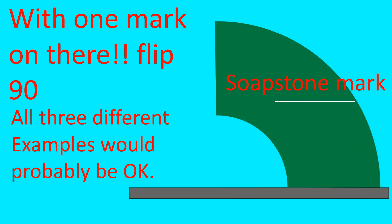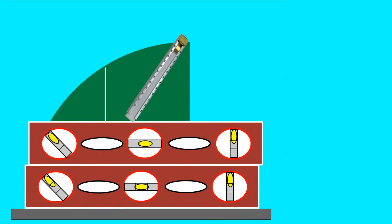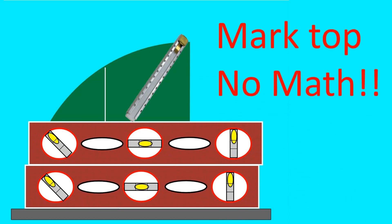With one mark on there, flip the 90. All three different examples would probably be okay, as you'll see as we go along. Flip over the 90, repeat the steps. Put your two levels there, mark the top. No math.